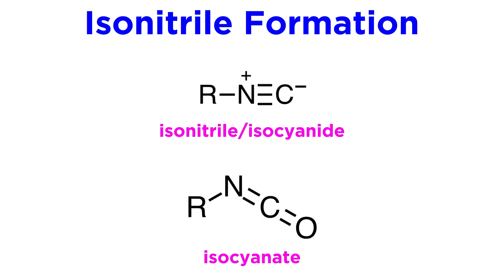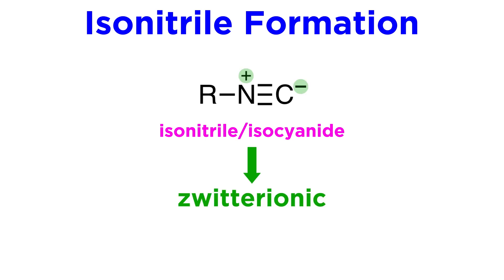Be careful not to mix these up with isocyanates, which we have discussed in other tutorials. Isonitriles are zwitterionic, with a positive charge on the nitrogen and a negative charge on the adjacent carbon, and a triple bond between them.